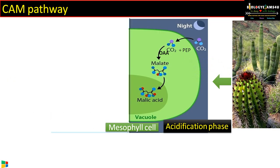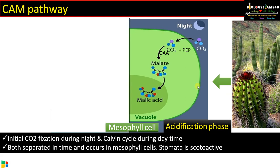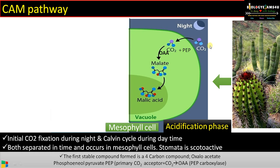Moving into the topic, starting with the CAM pathway. This is a desert plant, and you can see the mesophyll cells of this plant. The major concern of this plant is to conserve water, and this pathway allows the plants to conserve water. Let us move into the cycle.